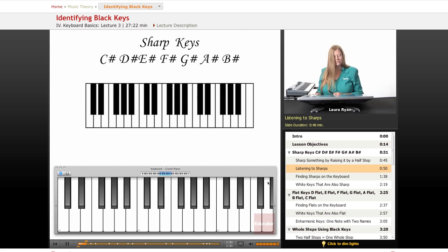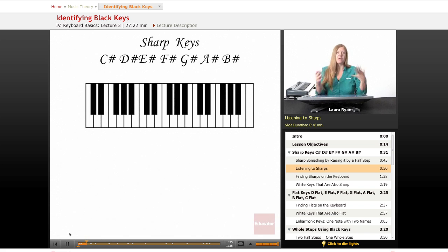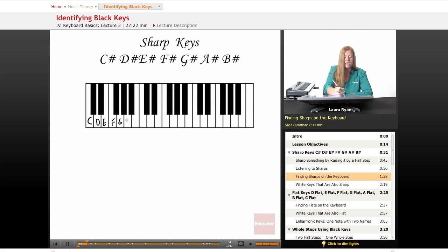So let's find them on the picture of the keyboard. First, let's draw the names of the white keys. C sharp, the black key above C natural, C sharp.